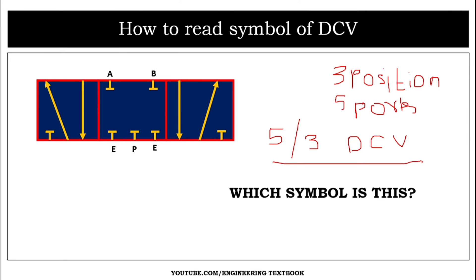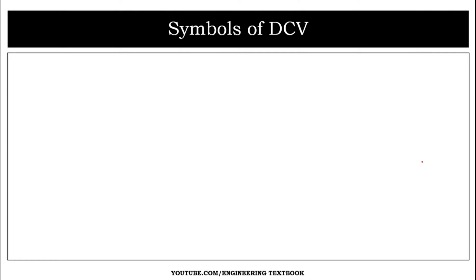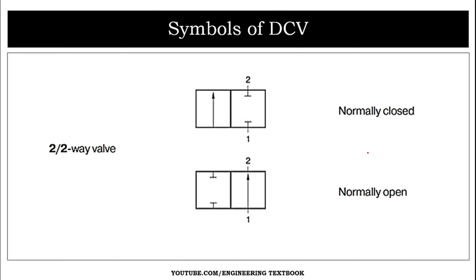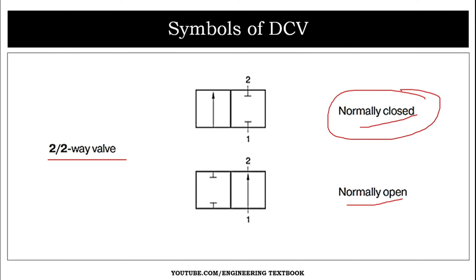Starting with today's video, we will see the list of symbols of direction control valves. Our first symbol is the two by two direction control valve in normally closed position and normally open position. In the normally closed position, port one and port two are not connected to each other — they are blocked.